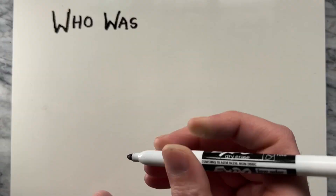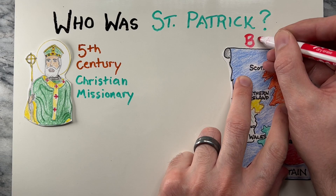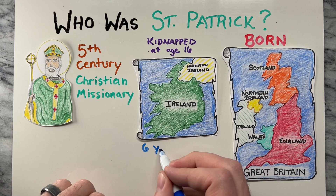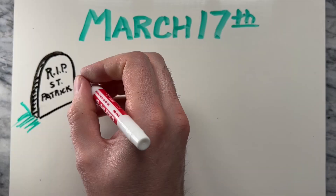St. Patrick was a Christian missionary who lived in the 5th century. He is said to have been born in Britain but was later kidnapped and taken to Ireland as a slave when he was 16 years old. After six years of captivity, he escaped and returned to Britain, but later returned to Ireland as a missionary where he spent the rest of his life spreading the Christian faith and building churches. St. Patrick died on March 17th, which is now celebrated as St. Patrick's Day.